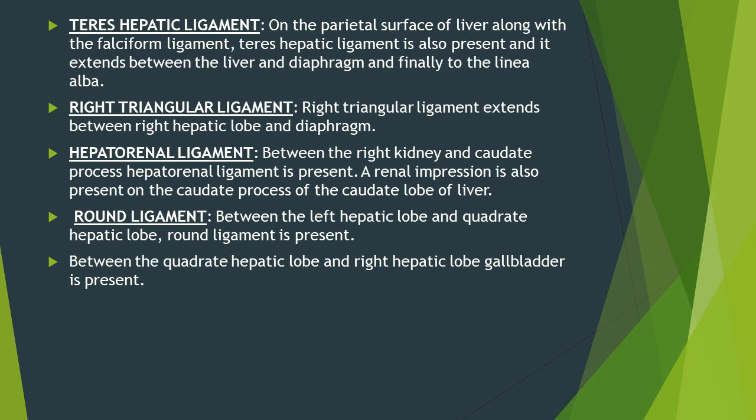The gallbladder in ox is present between the quadrate hepatic lobe and right hepatic lobe. Between the left hepatic lobe and quadrate hepatic lobe there is another ligament called the round ligament. This round ligament is actually the free end of the falciform ligament and connects the liver with the umbilicus in the fetus. It has function only in the fetus; in adults it has no function.